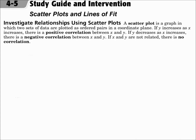A scatter plot is a graph in which two sets of data are plotted as ordered pairs in a coordinate plane. If y increases as x increases, there is a positive correlation between x and y. If y decreases as x increases, there is a negative correlation between x and y. And if x and y are not related, there is no correlation.